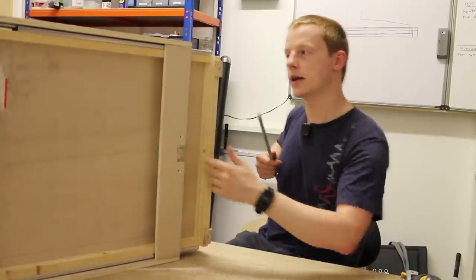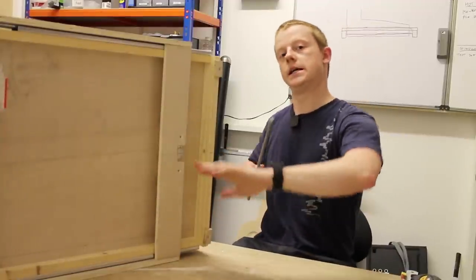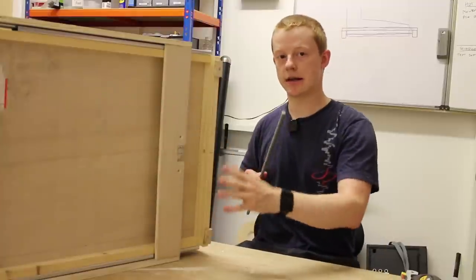There'll be a motor mounted at the back here and it'll pass through the nut attached to the carriage. So as it rotates, the carriage will get driven back and forwards and it's all concealed and hidden out of the way.